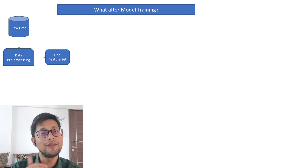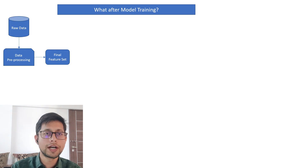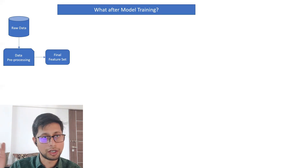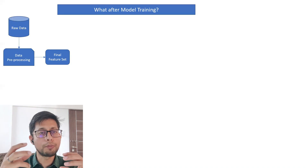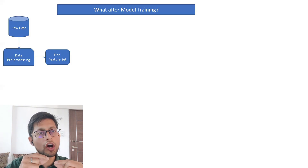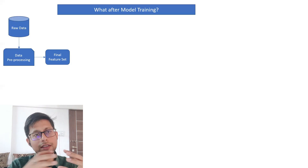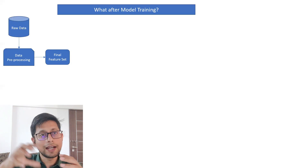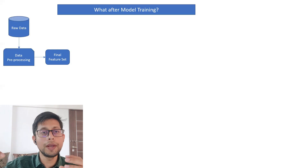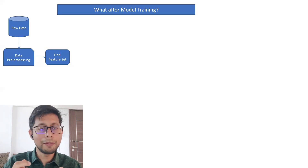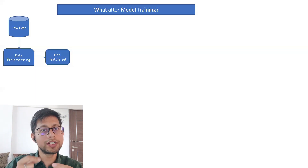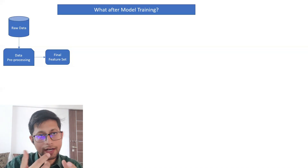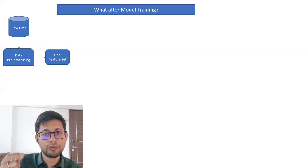Why do we need a feature store? We trained the model, deployed the model, and then live data starts coming in. Over time, there is a possibility that the statistical properties of live data change — it is no longer similar to the training data. If we feed this new data to a model trained on old data, the outputs will not be accurate enough. To avoid that scenario, we use a feature store.